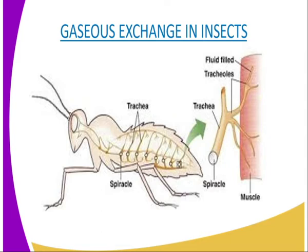Spiracles are external openings present on either side of the abdomen and thorax of an insect, through which air from the atmosphere enters the body. Each spiracle is supplied with a muscular valve that controls its opening, and also with hairs to prevent excessive loss of water from the tissues by evaporation.